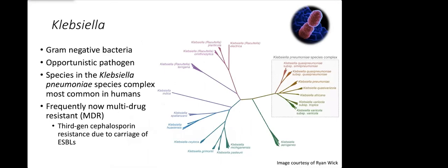However, species that fall within the Klebsiella pneumoniae species complex, which are the seven species shown in the box, are the most common in humans. Species within the Klebsiella pneumoniae species complex are often multi-drug resistant when we find them in hospitals.